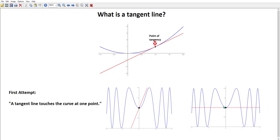The actual tangent line, which is drawn here, in fact touches the curve at many different points. So a tangent line touching the curve at one point doesn't actually do much for us in terms of describing a tangent line.